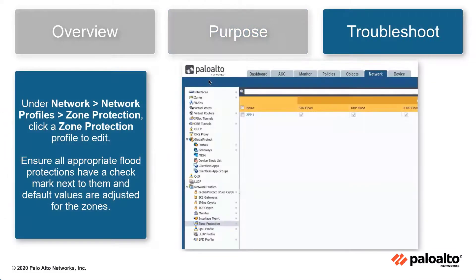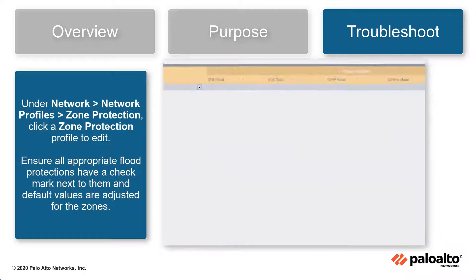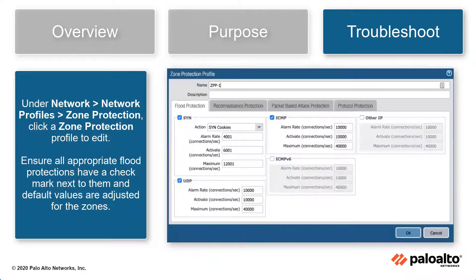Under Network, Network Profiles, Zone Protection, click on a zone protection profile to edit. Ensure all the appropriate flood protections have a checkmark next to them and the default values are adjusted for the zones. This will ensure the best practice check passes.